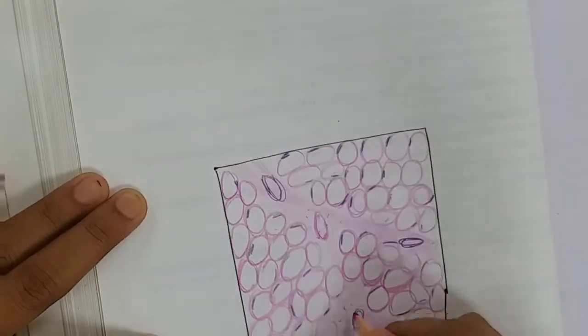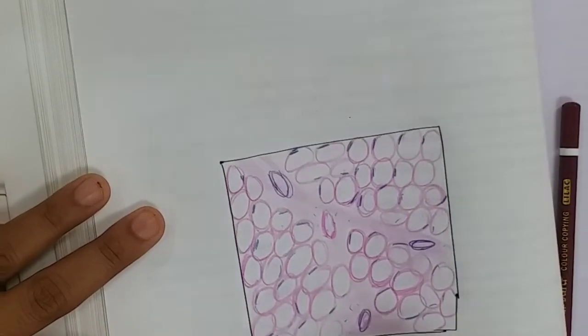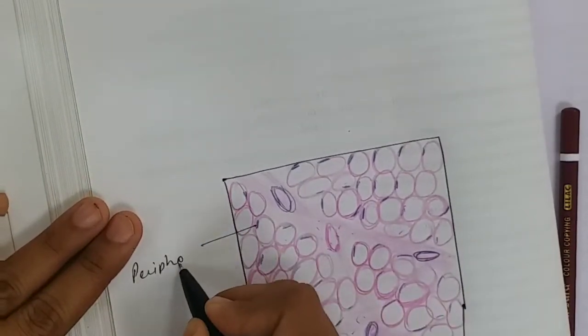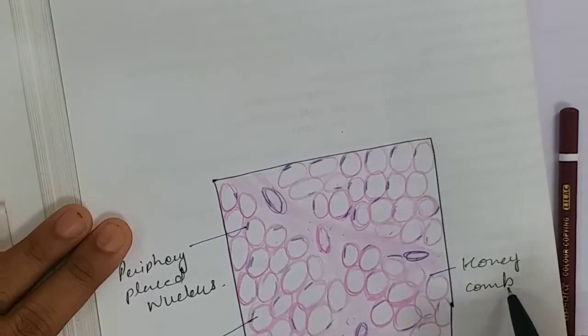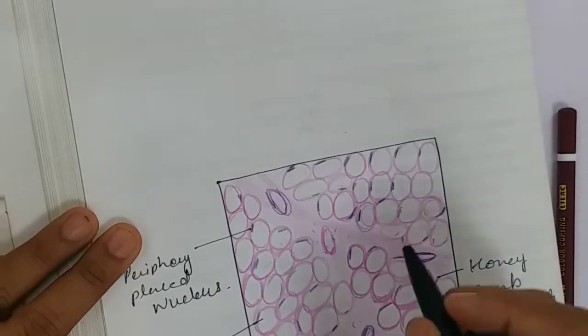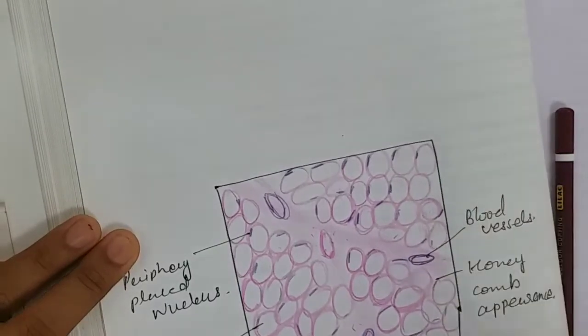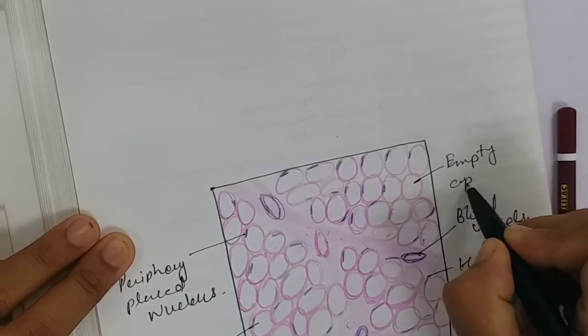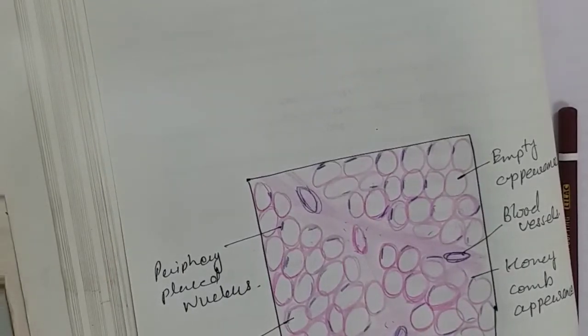The adipose tissue is vascular. In between, there are blood vessels present. Labeling: fat cell, peripherally placed flat nucleus, whole tissue gives honeycomb appearance, blood vessels, empty appearance of single cell, areolar tissue.